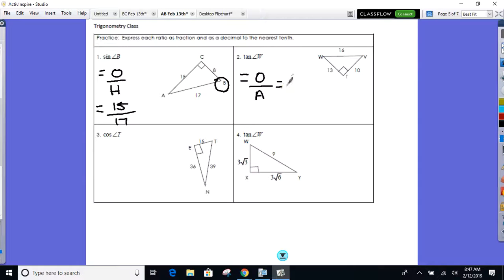What's the opposite side from W? 10. And what's the adjacent leg from W? Not the hypotenuse, the leg. 13. So there's your ratio.